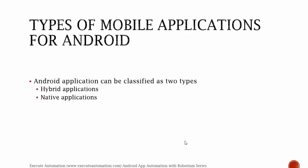The different types of mobile applications for Android are classified into two types: one is hybrid applications and another one is native applications.